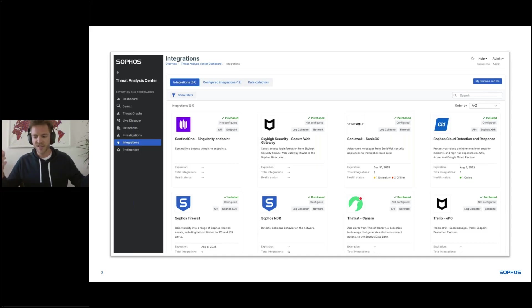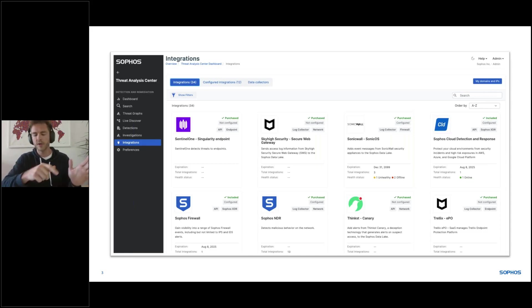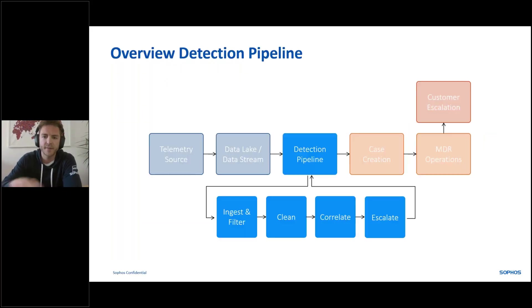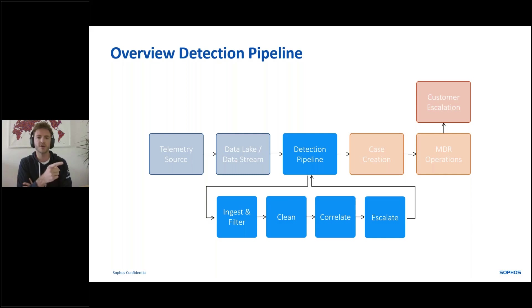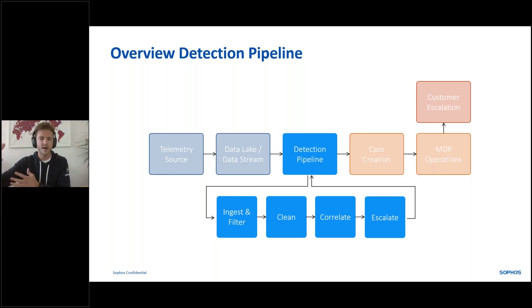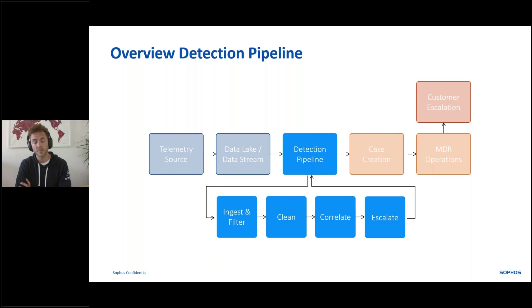Once you've enabled that, then what happens? Rudy said he had a push fraud MFA suspicious activity that flagged up a case — our MDR team wrote up a case and sent it over, and then he went to see further investigation. But how did we get there? From telemetry source on the left all the way to customer escalation — you as the MSP are the customer for us, and we'll be escalating those cases to you. What happens in between? How do we take a bunch of logs, turn them into something beautiful to work with, correlate them, and escalate them to our MDR analysts?